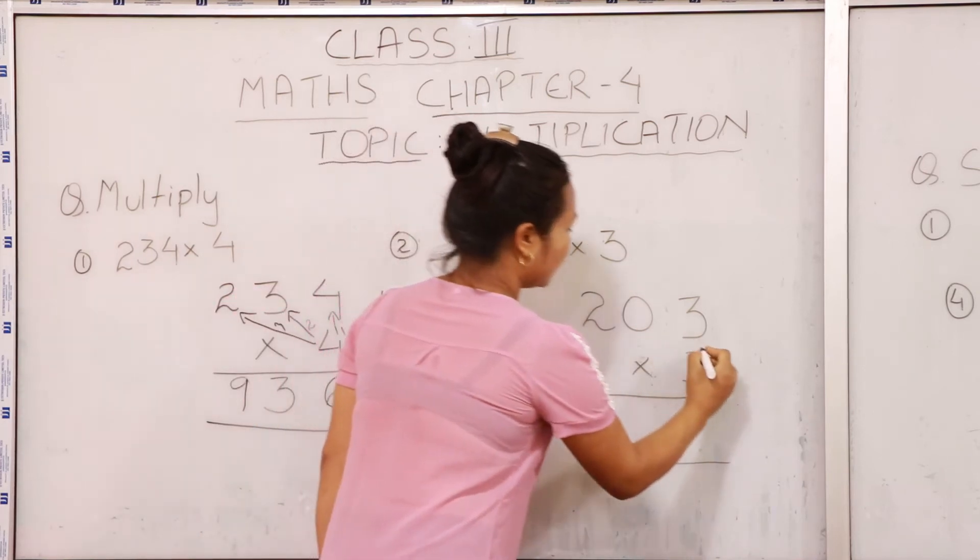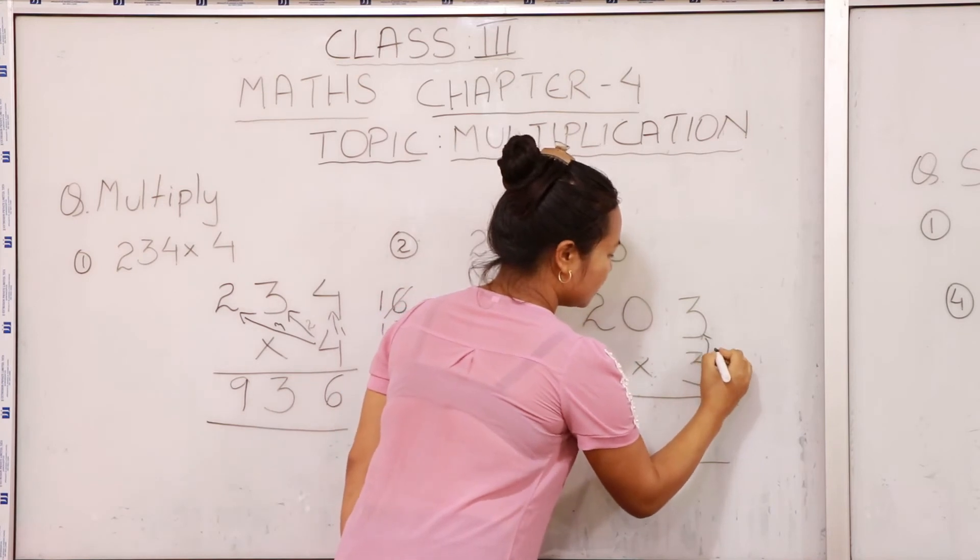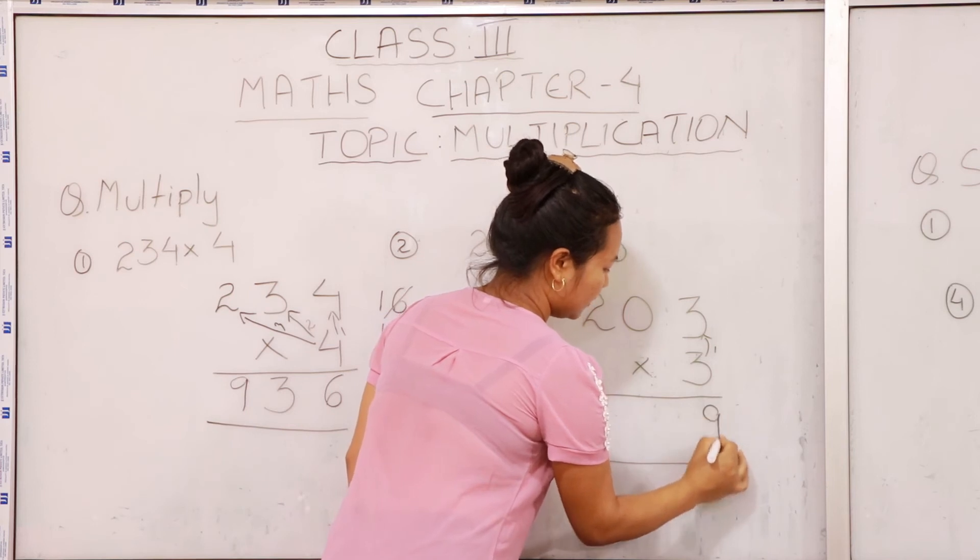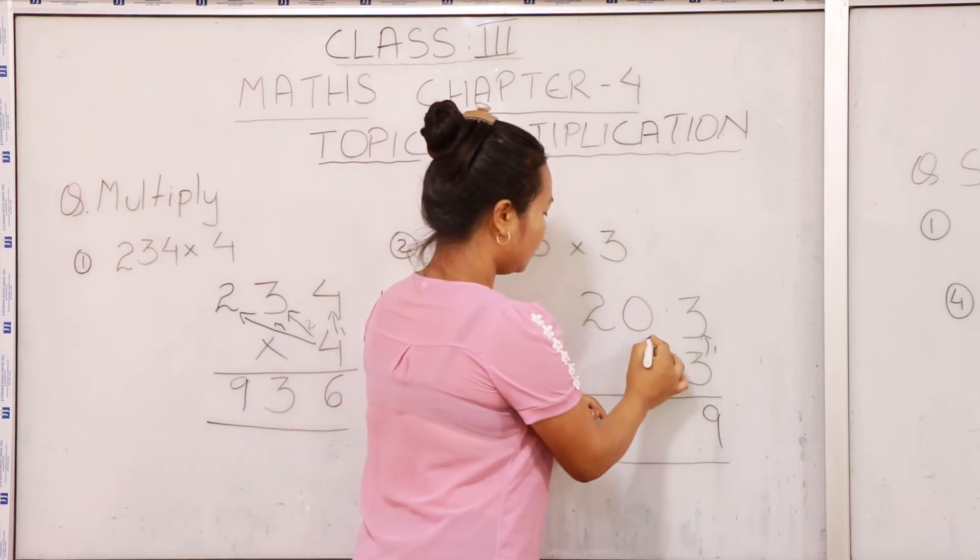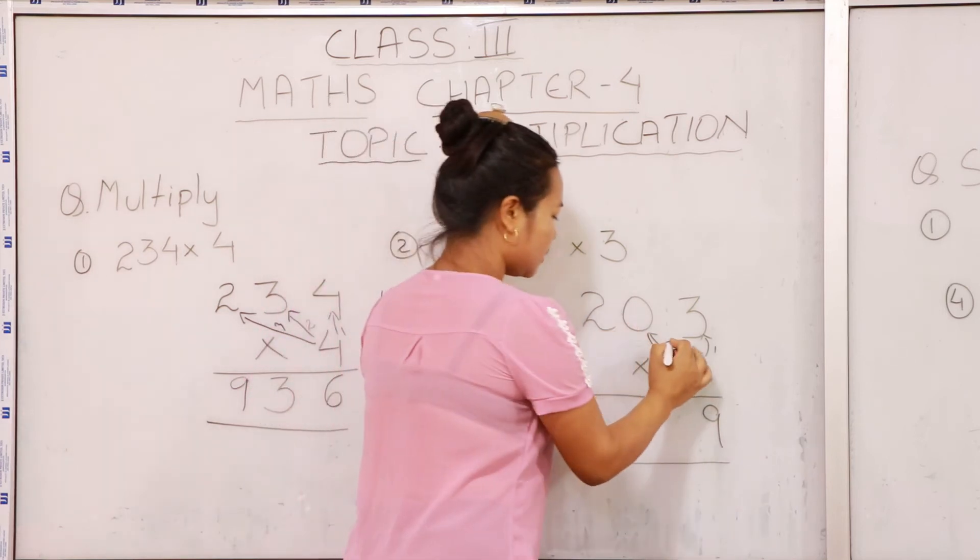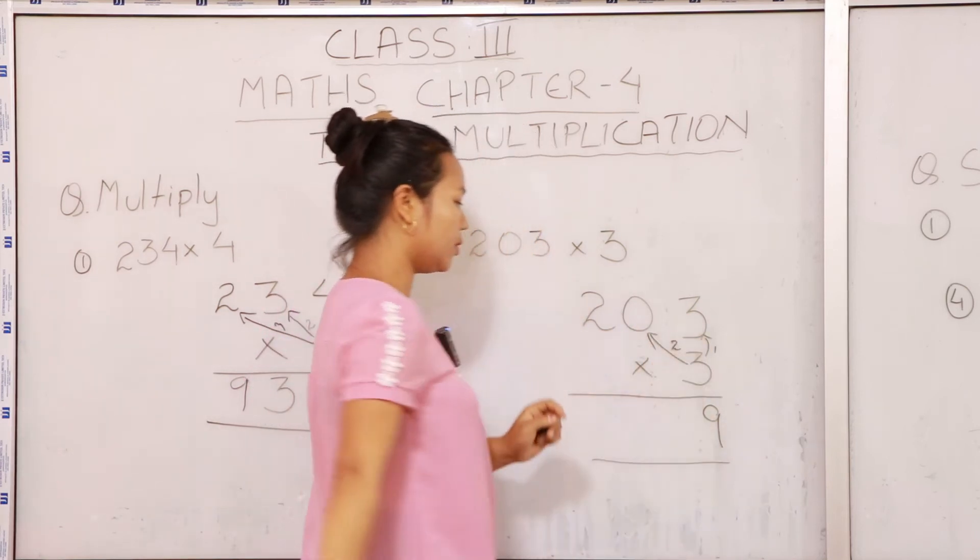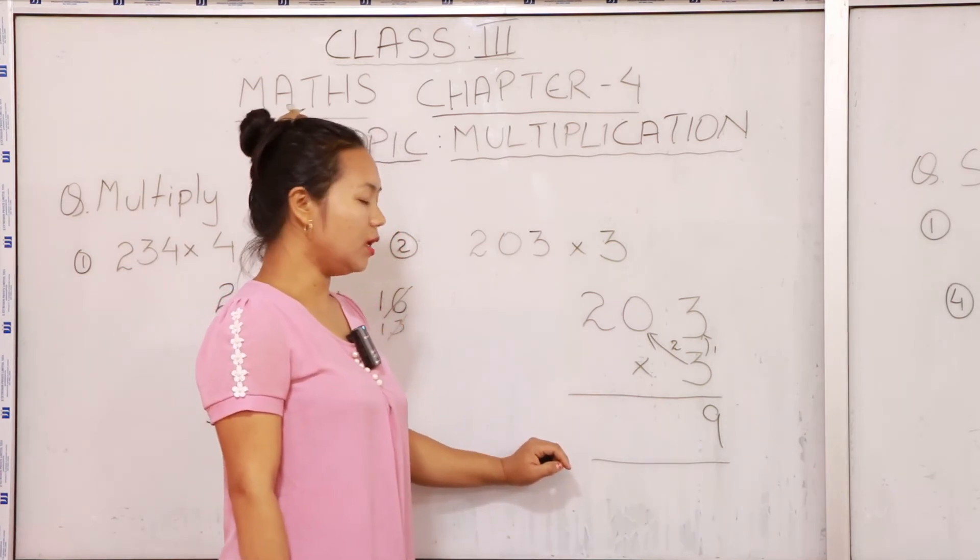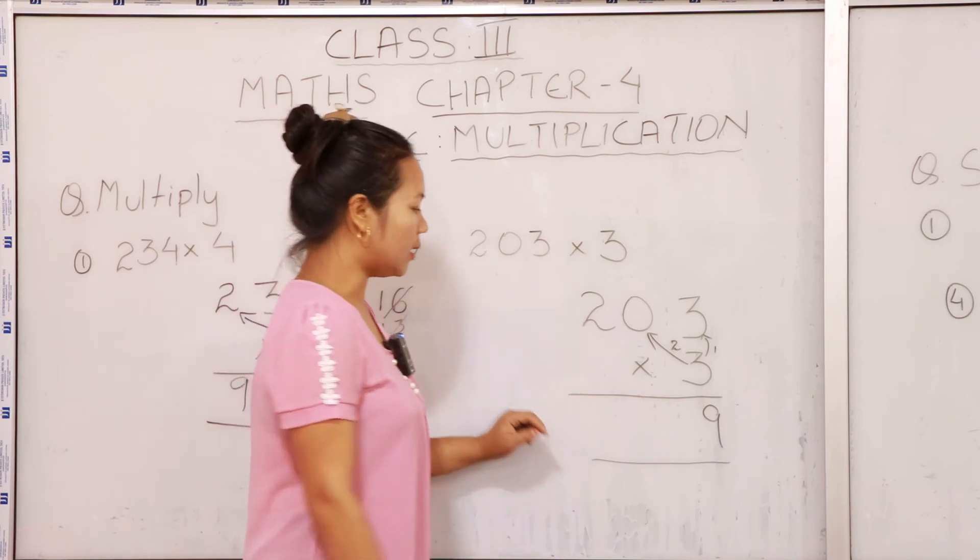So as we know, this one will be the first: 3 threes are 9. And the second will be 3 and 0, that is 3 zeros are 0. As we know that any number multiplied by 0, the answer will always be 0.